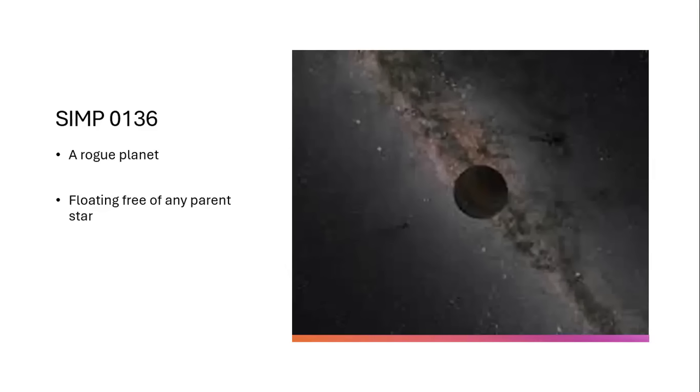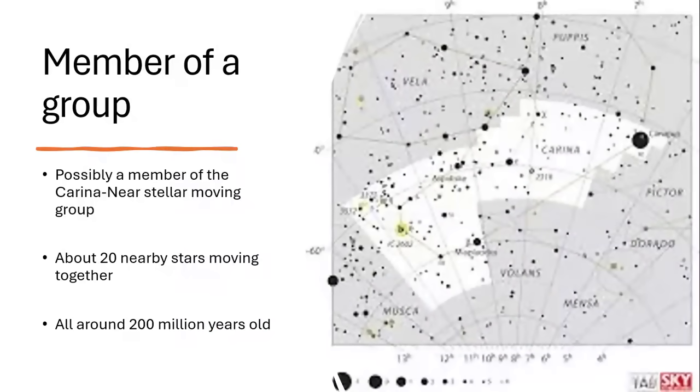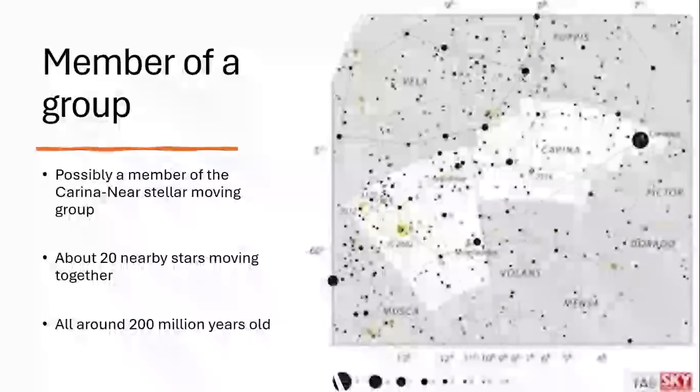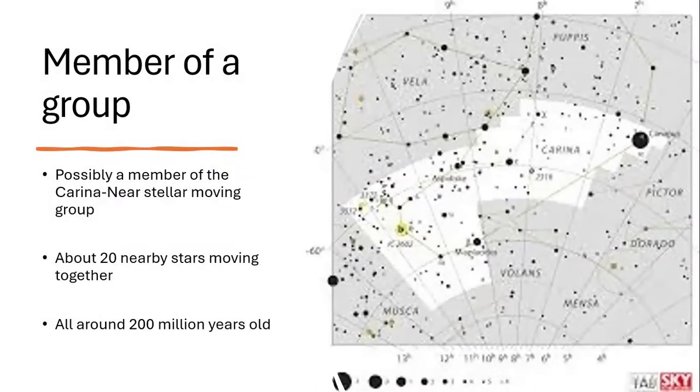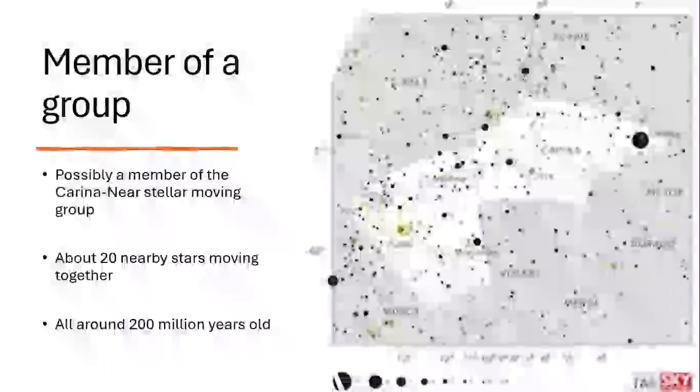But SIMP 0136 is particularly interesting. It's part of a moving group, the Carina near-stellar moving group. This is about 20 fairly faint stars that have been discovered, all sharing the same trajectory in three dimensions and tracing back to an origin somewhere in the constellation of Carina. As if around 200 million years ago, they were all formed together and perhaps SIMP 0136 was formed within that group,